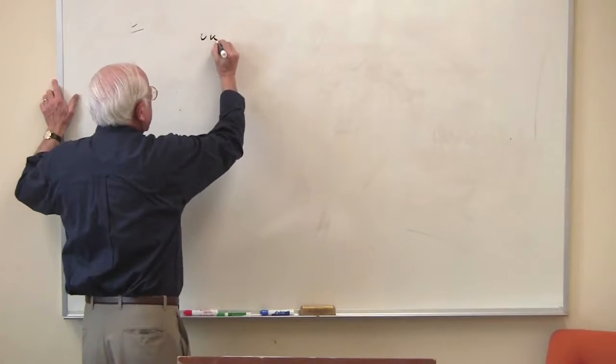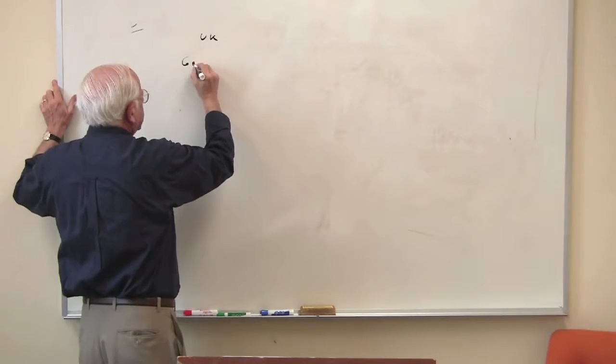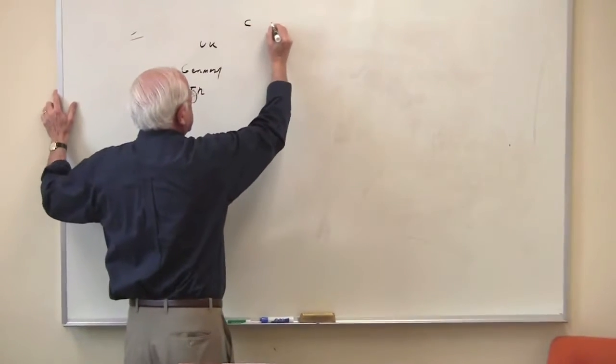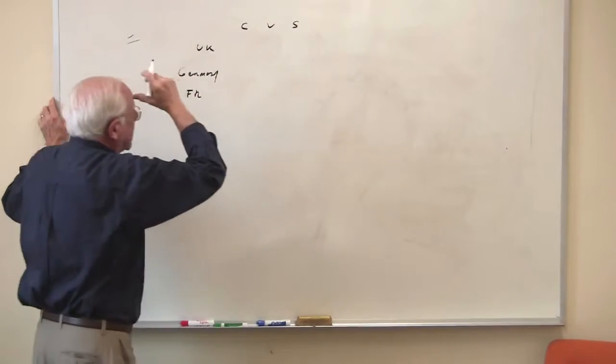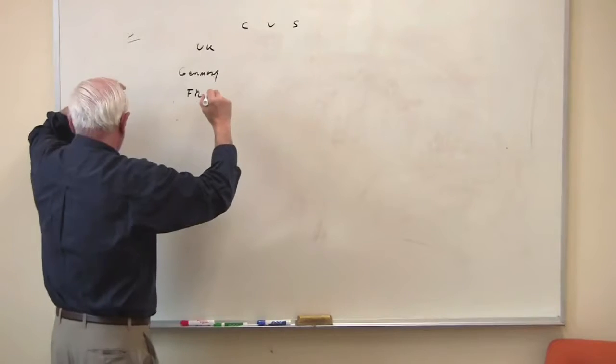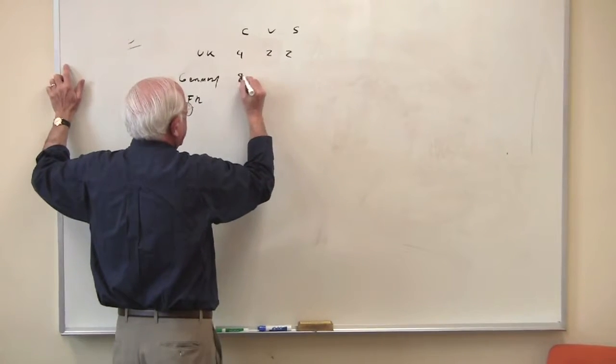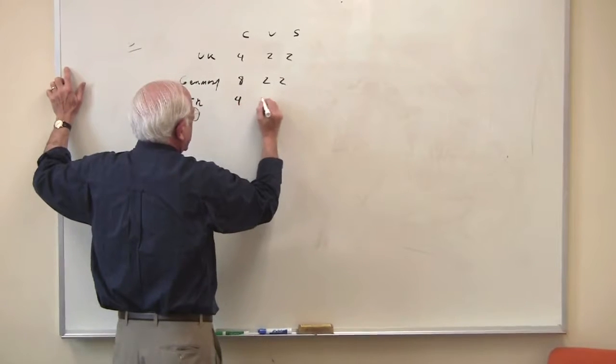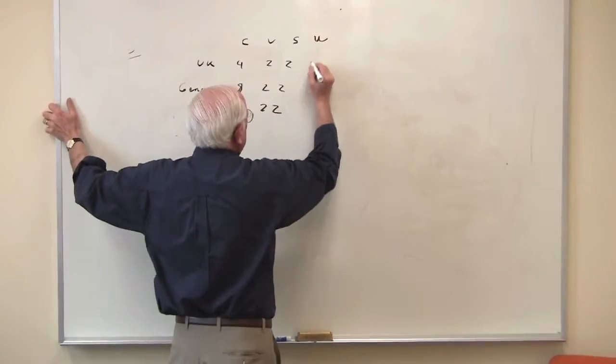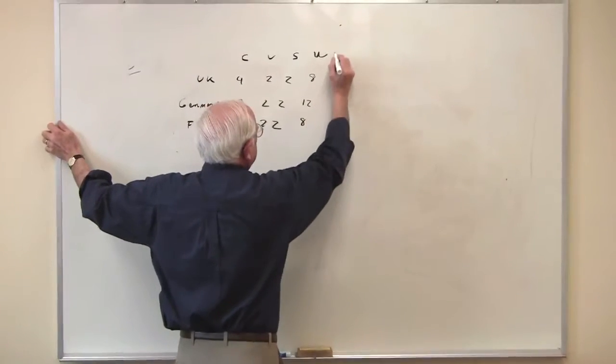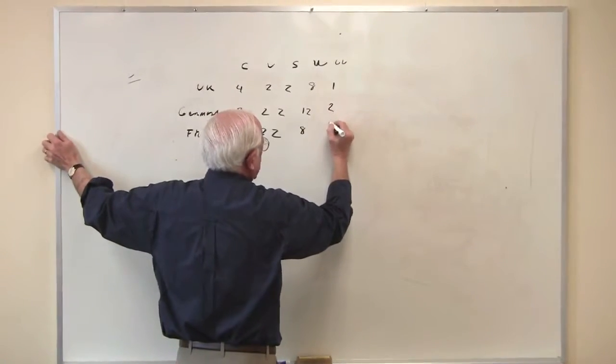I'm going to use UK, Germany, and France. And this is again, C, V, and S. So I had here 4, 2, 2, 8, 2, 2, 4, 2, 2. This is the W. The total value was 8. This is 12. This is 8. The use value is 1, 2, 1.